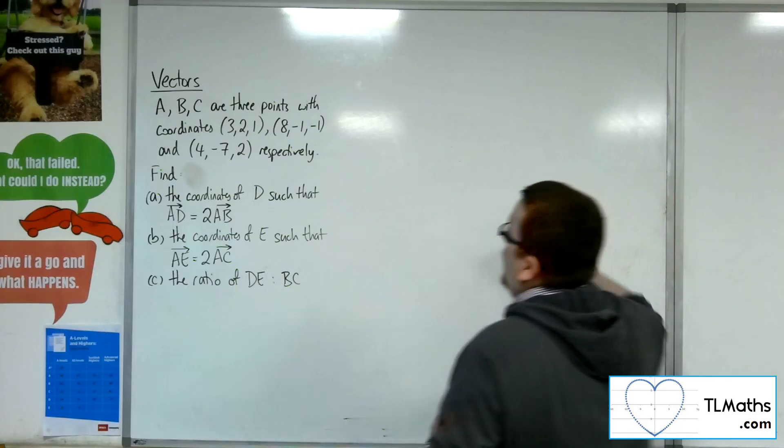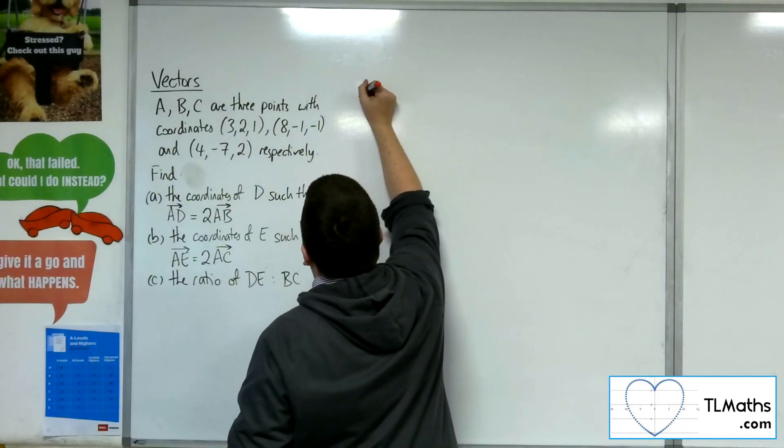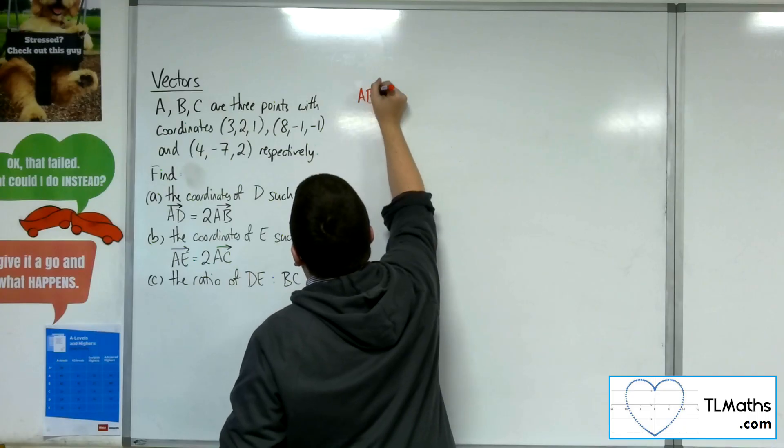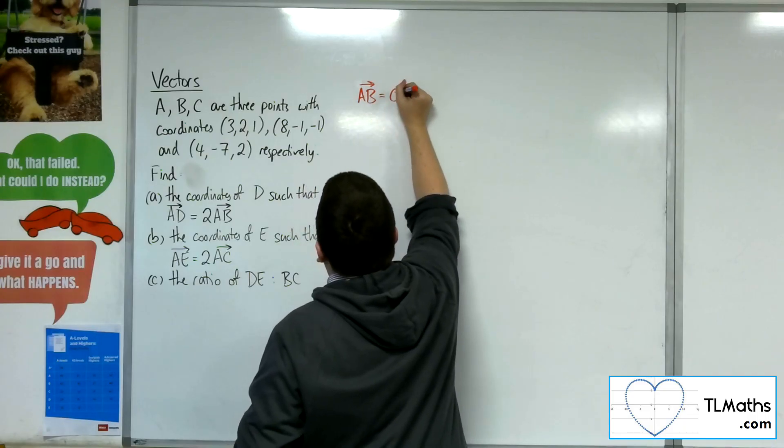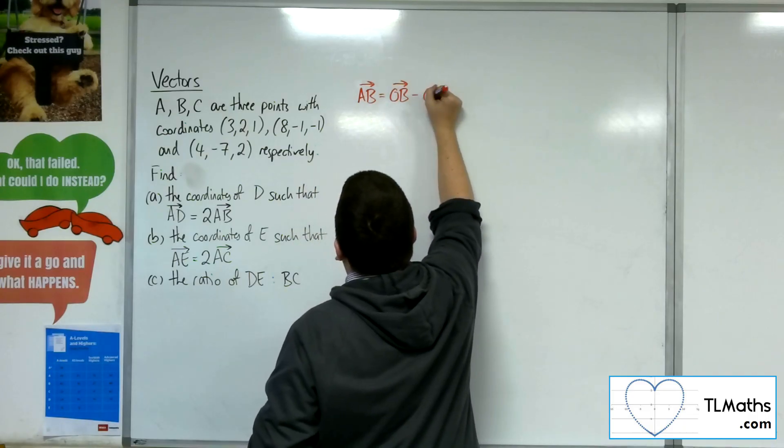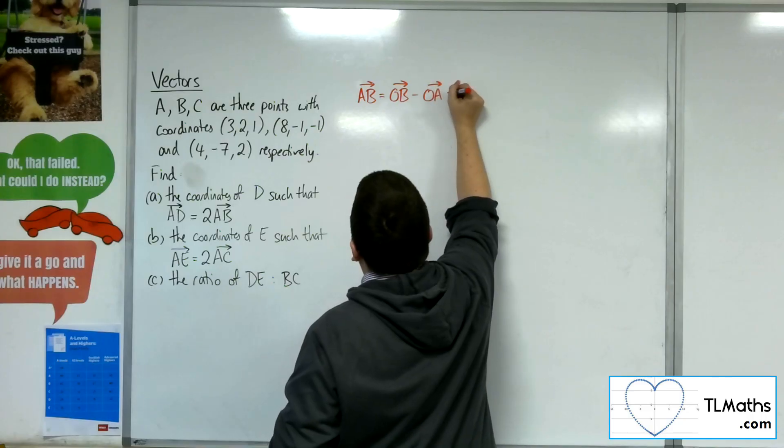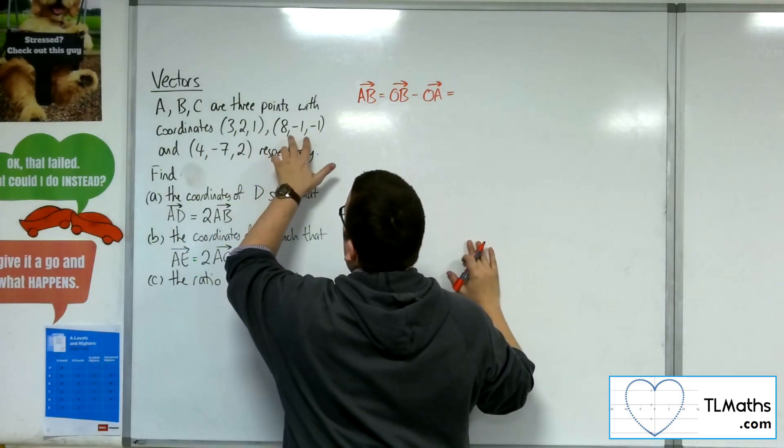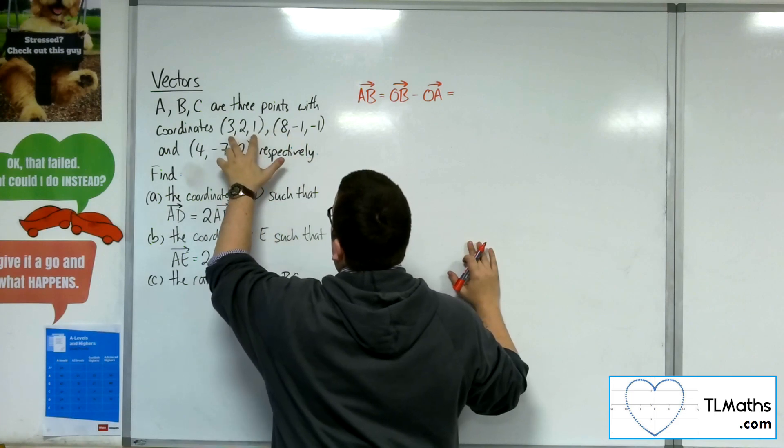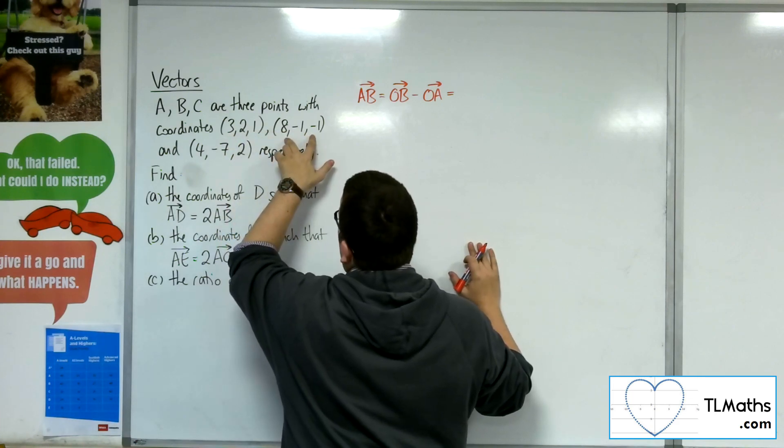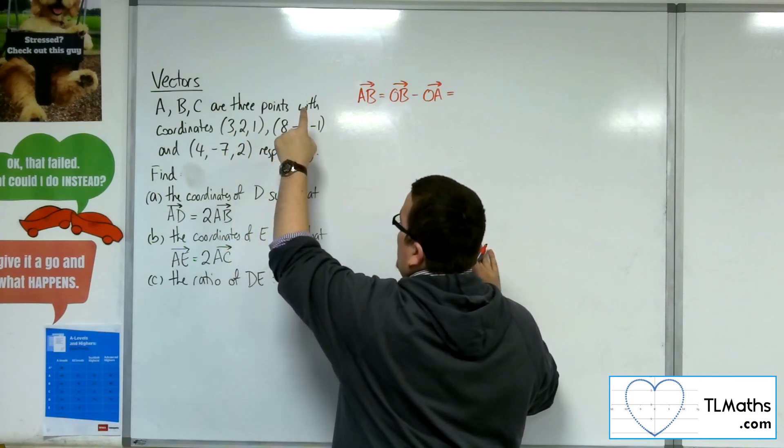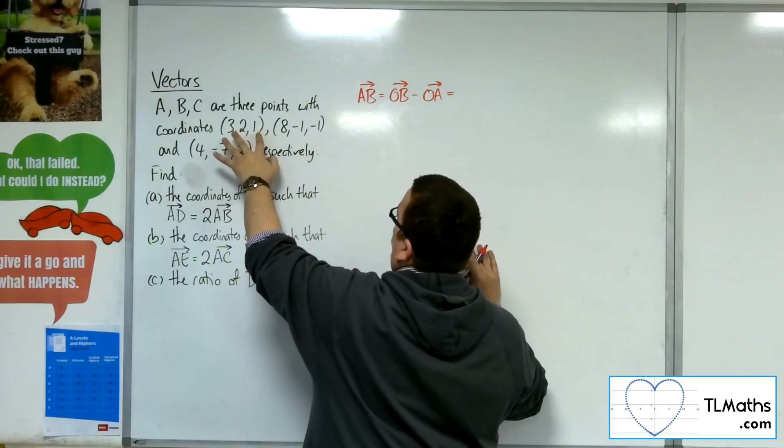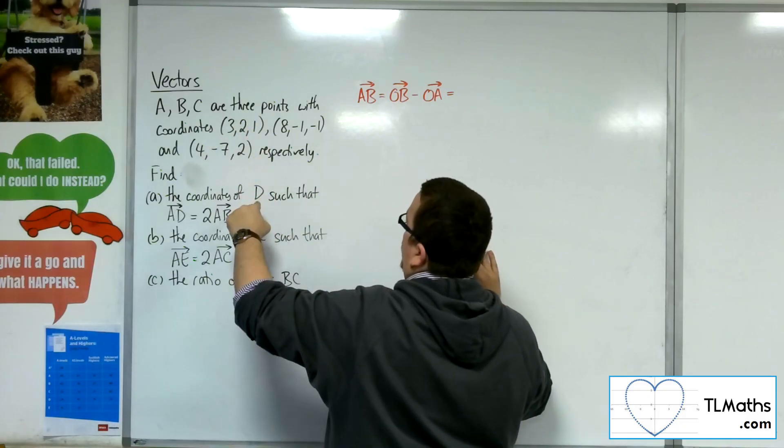So I need to find AB. The vector AB is OB minus OA. So we're going to have the position vector of B take away the position vector of A. Now, remember, these are the coordinates, but the position vector of B will be 8 minus 1 minus 1. The position vector of A will be 3, 2, 1.